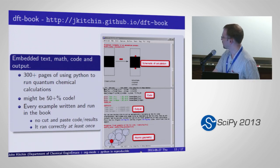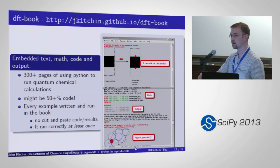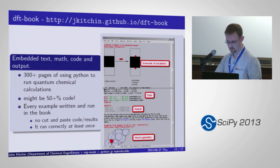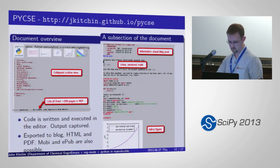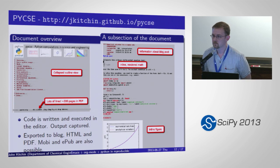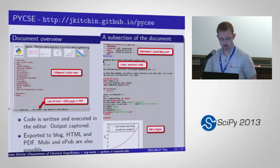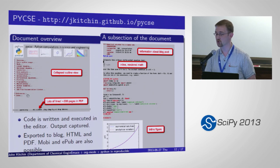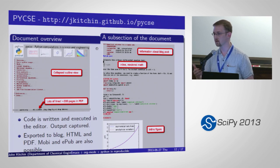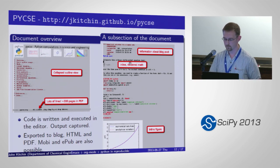A question from the audience: when you export to LaTeX, do you have to manually put in section titles? No — there is a whole export engine that knows how to handle all of the org-mode elements. Each one of these stars is a section; three stars is a sub-subsection. So it's automatically exported in a fairly simple and transparent way.